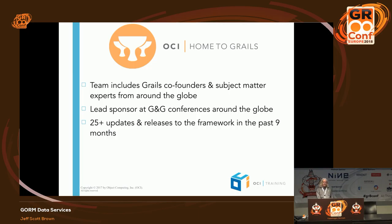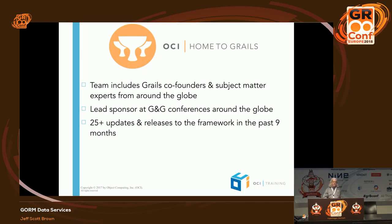Grails is a general purpose framework for building any kind of web app you might want to build. That's part of the reason OCI has been such a great fit for the Grails team. The team right now has about 19 people at OCI; OCI as a whole has about 150 engineers. We sponsor all the major Groovy and Grails conferences all over the world, including GrailsConf EU here this week.